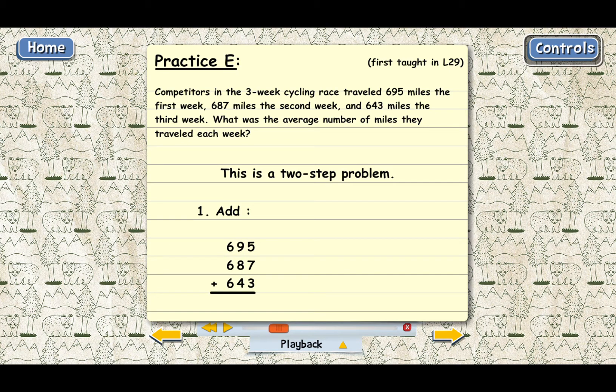And now that everything's lined up, we can start adding in the ones column. There we have 5 plus 7, that's 12, and 12 plus 3 is 15. Put a 5 below and carry a 1.